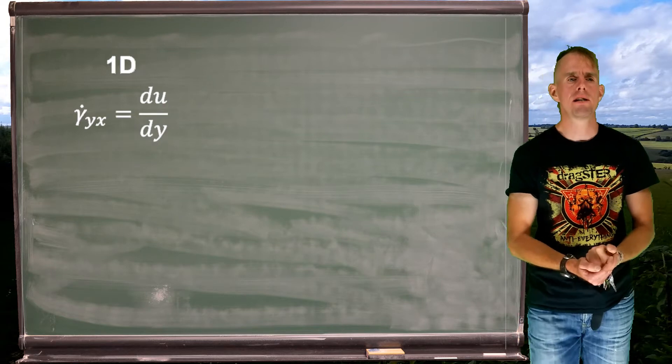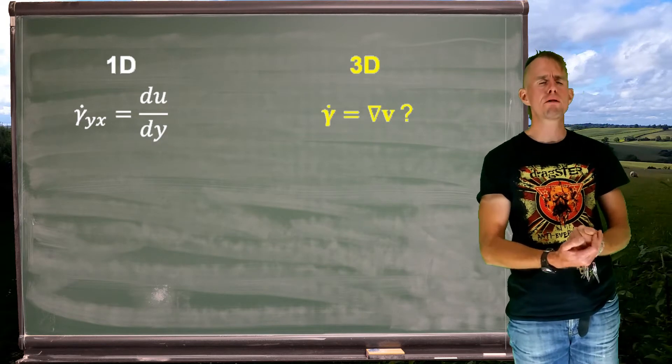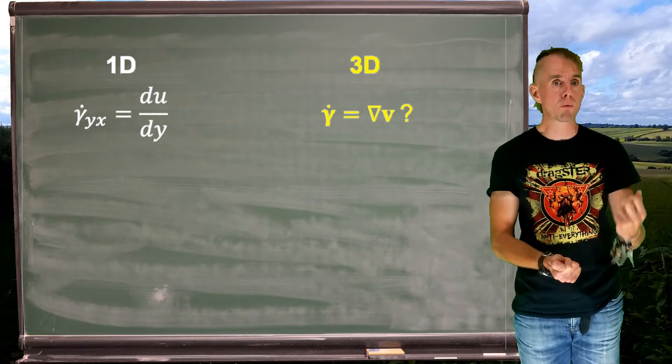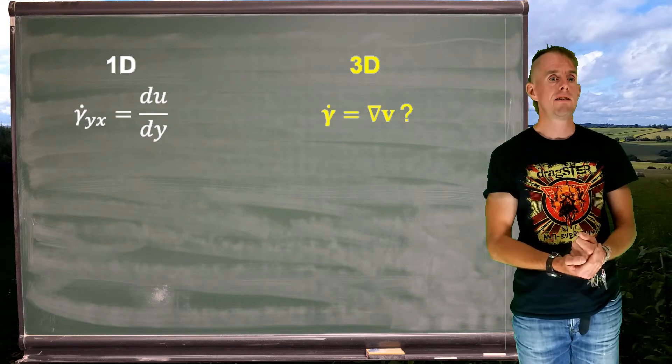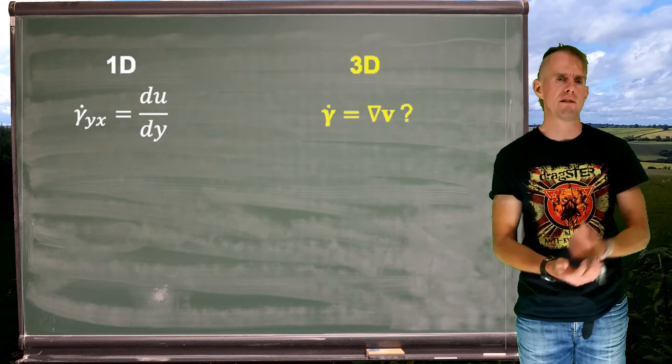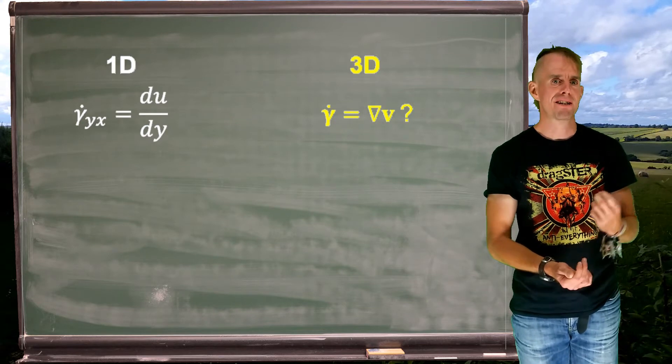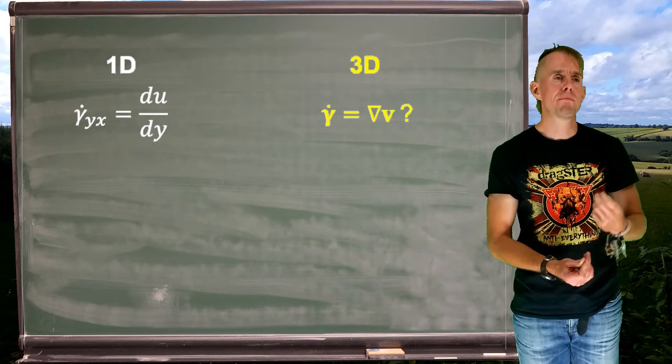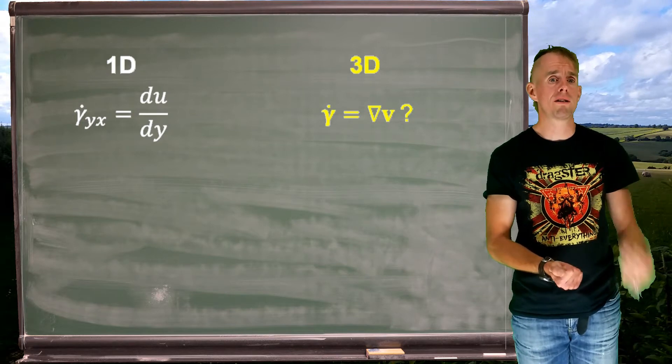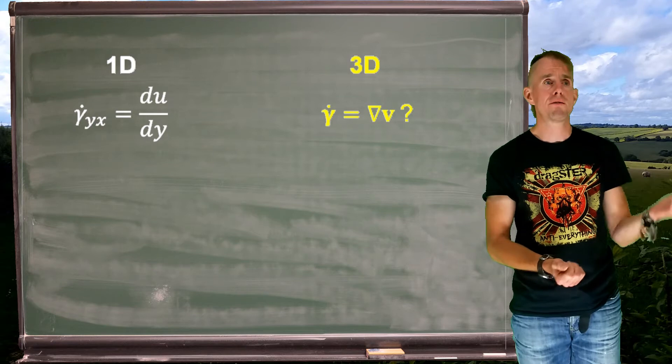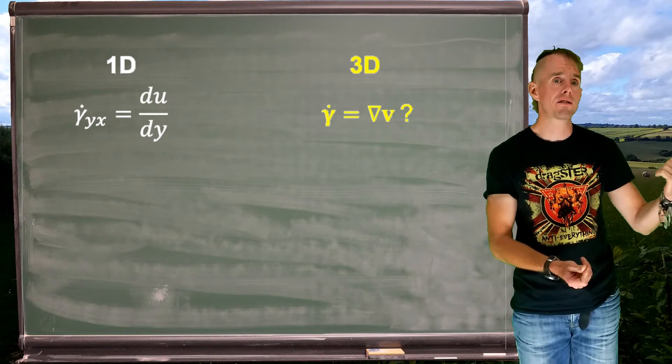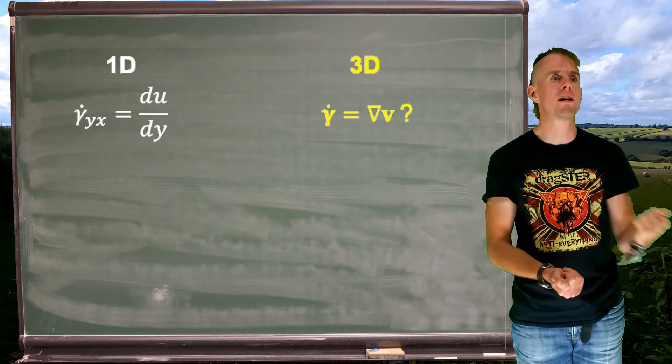What about in 3D? Let's propose something. Let's propose that gamma dot tensor is equal to velocity gradient information, grad v. Now grad can strike fear into the hearts of some, but don't be afraid of it. All it is is just a differential, but it's a differential in 3D. So grad, in Cartesian coordinates, is d by dx, d by dy, and d by dz.